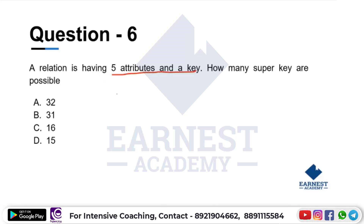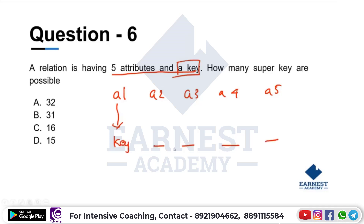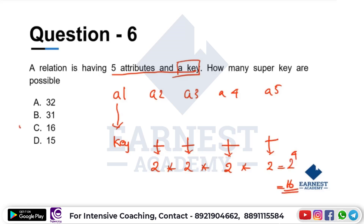A relation has five attributes: A1, A2, A3, A4, A5. Given a key with one integral attribute, we need to count the number of super keys. The calculation gives 2 raised to 4, which equals 16.